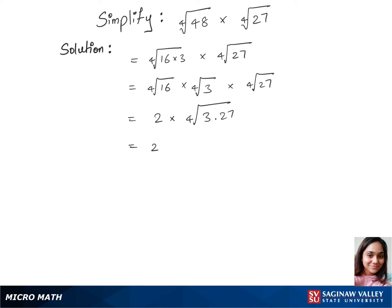Now we have 2 times fourth root of, 3 times 27 is 81. In our next step, we'll write this as 2 times fourth root of 81, which is 3 to the power 4.